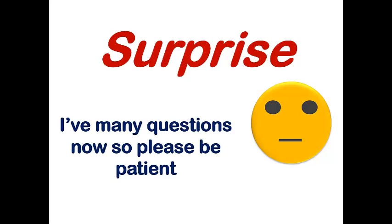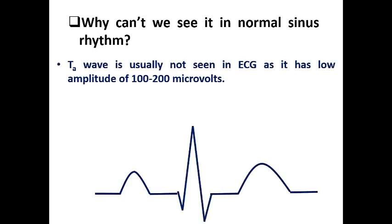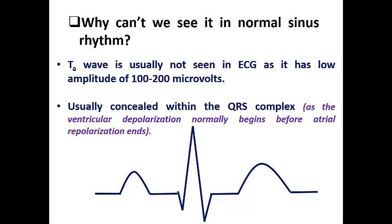It is a surprise for many of us that we have a TA wave, and many questions arise. I will present this lecture in a form of questions and answers. The first question: why can't we see this wave in normal sinus rhythm? The answer is that the TA wave is usually not seen on ECG because it has a low amplitude of about 100 to 200 microvolts, and it is usually concealed within the QRS complex, as ventricular depolarization normally begins before atrial repolarization ends. It appears nearly in the PR segment, blending with the QRS complex, and usually terminates after the QRS complex.